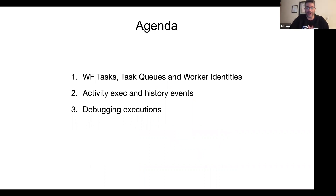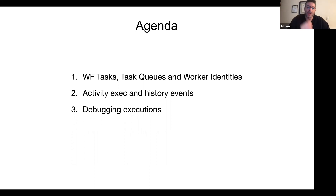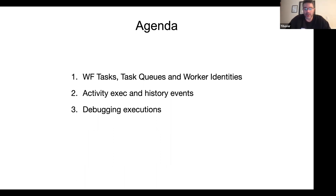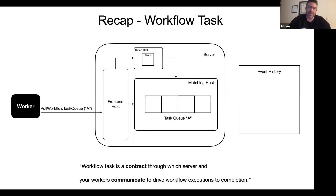For today's talk we have a lot of stuff to cover. We're going to talk about workflow tasks again, task queues, worker identities, and how they all work together when debugging event histories. The second part is about activity executions and the history events around them. The third part is debugging real user questions - we'll go through actual event histories and figure out what's going on with various executions.